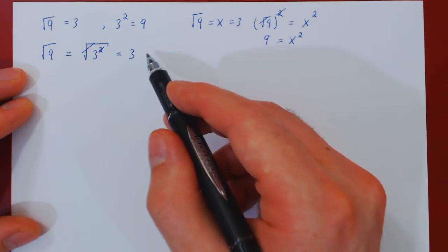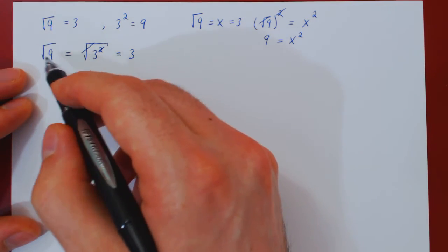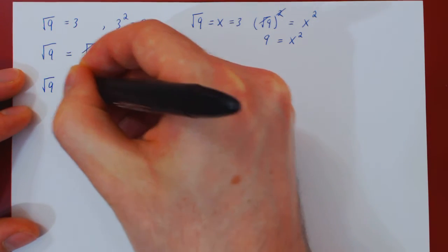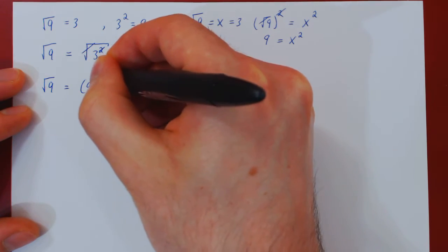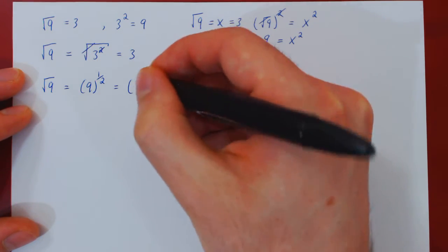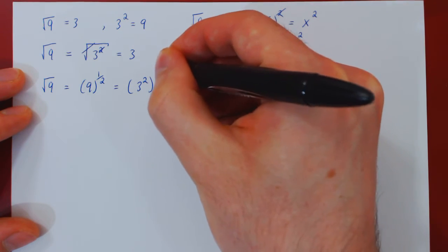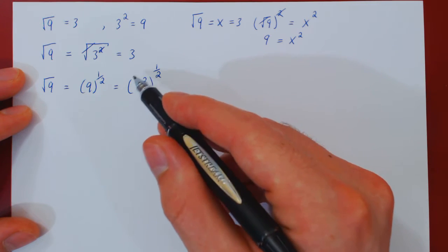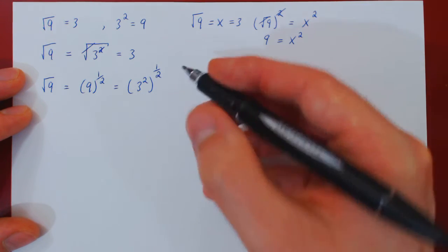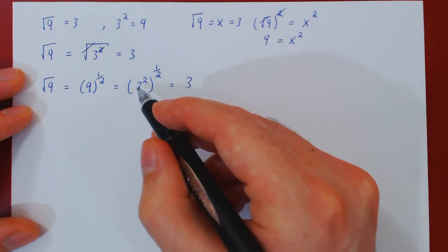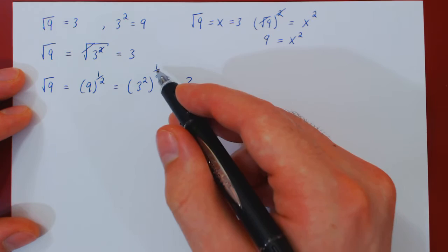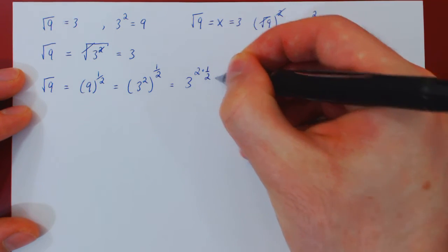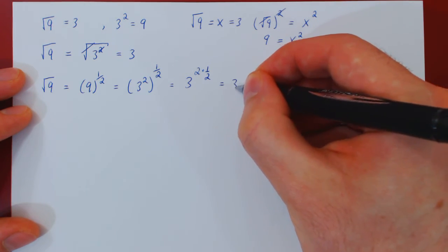You can also view the same process thinking of the square root as a power of 1 half, and you get the same result. The square root is the power of 1 half, now rewrite 9 as 3 squared, and now we have a double exponentiation. We took 3, raised it to the power of 2, then raised the whole thing to the power of 1 half. When you double exponentiate an expression, you can combine the exponents by multiplying the two together. So we have 2 times 1 half, but 2 times 1 half is 1, so the answer is simply 3.